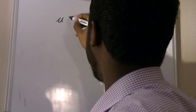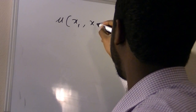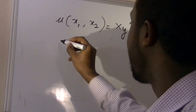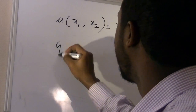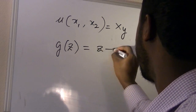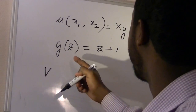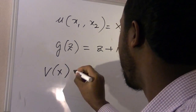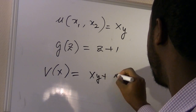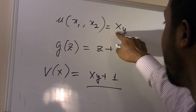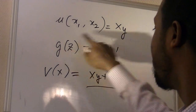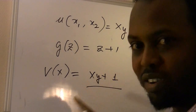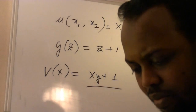Let's say we have u(x₁, x₂), a homogeneous function equal to x times y. And we have a monotonic transformation function g(z) equal to z plus 1. If we insert this homogeneous function into g, what we get is the homothetic function v(x), which is equal to xy plus 1. Notice that while we started with a homogeneous function, after transforming it monotonically we have a non-homogeneous function, and the new name for this new function is homothetic.